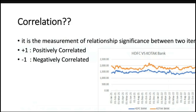Why is this happening? There's something called correlation in mathematics. Correlation is a measurement of the relationship significance between two items. If it is positive, that means they are positively correlated — they go in the same direction, like a happily married couple. If it is negative, they tend to do things differently. In the chart you will see the data of HDFC Bank versus Kotak Bank — it is wonderfully correlated. You won't believe that these are prices of two separate stocks doing exactly the same thing at the same time.